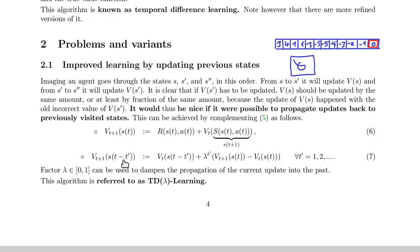You update those previous states from v_t to v_{t+1} by the difference applied to the current state — simply correcting previous states by the same adaptation. If the pre-factor were 1, all states would update equally. But typically one chooses a value between 0 and 1, with the exponent t', so the most recent previous state is updated most, and states further in the past are updated less and less.